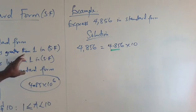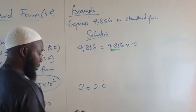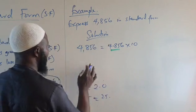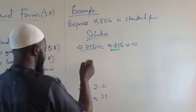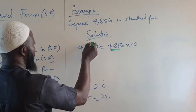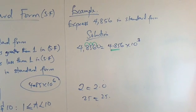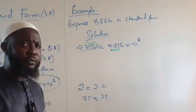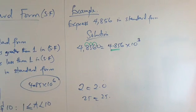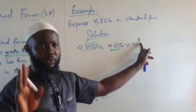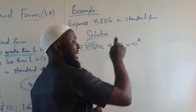Because this number 4856 is greater than 1, we note that 4856 can be written as 4856.0. We now move the decimal point to the left: 1, 2, 3 places. So it is going to be raised to the power 3. We moved the decimal point 3 times, so the answer is 4.856 × 10³. When the number given is greater than 1, the power is always positive. If the number is less than 1, the power will be negative.